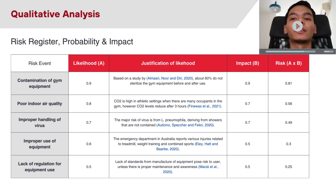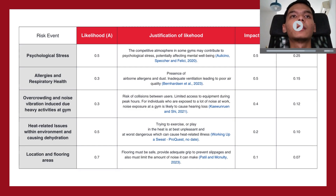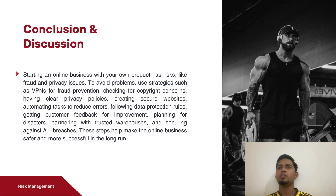The fifth risk event is the lack of regulation of equipment for use, with a risk value of 0.25. Studies show that lack of standards from manufacturers of equipment poses a risk to users unless there is proper maintenance and awareness. Other risk events include psychological stress, allergies and respiratory health, overcrowding and noise, vibration induced by heavy activities at the gym, heat-related issues causing dehydration, and location and flooring areas.